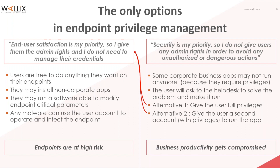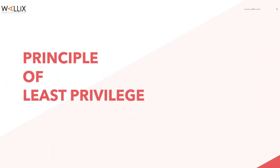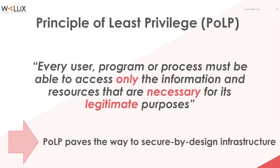So how do you solve the issue of endpoint security? Fortunately, there is a solution to the productivity versus security conundrum — it is the principle of least privilege. The principle of least privilege, sometimes referred to as the principle of minimal privilege or least authority, asserts that one must only have access to the information and resources necessary for one's legitimate purpose. That is, any user, program, or process must only be granted access to the minimum resources necessary at any given time to carry out a task — no more, no less.